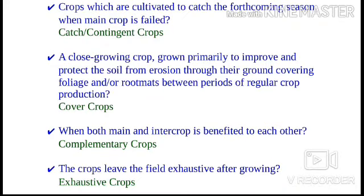A close-growing crop grown primarily to improve and protect the soil from erosion through ground covering and foliage or root mats, between periods of regular crop production, is known as a cover crop. Cover crops manage soil erosion, soil fertility, soil quality, water, weeds, pests, diseases, biodiversity, and wildlife in an agro-ecosystem. Examples of cover crops are annual ryegrasses, crimson clover, oats, oilseed radishes, and cereal rye, grown for a variety of reasons including reducing soil compaction.